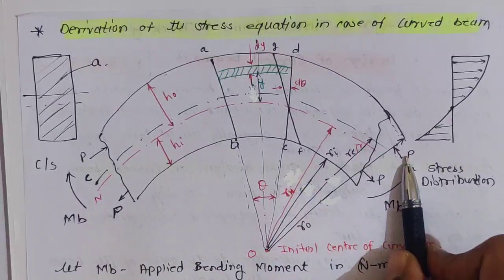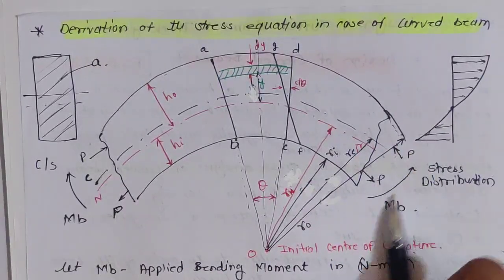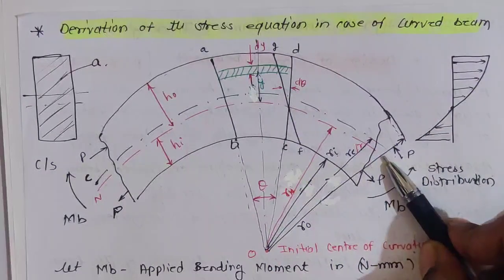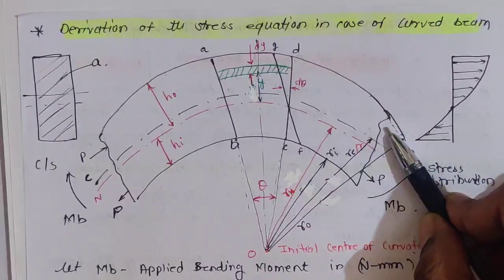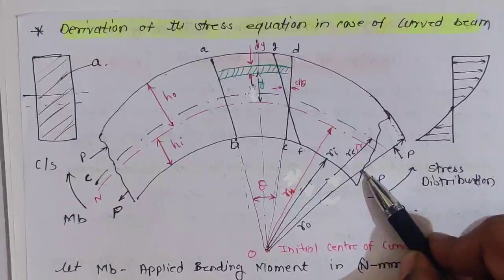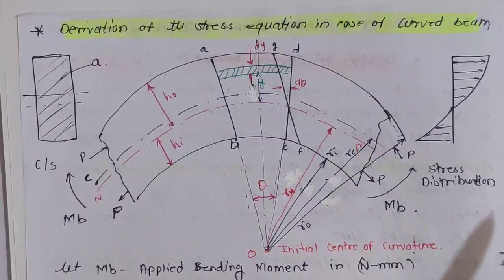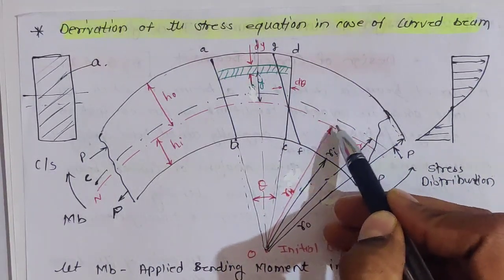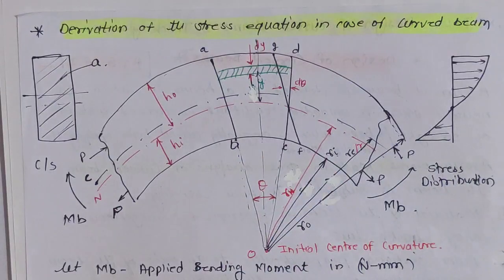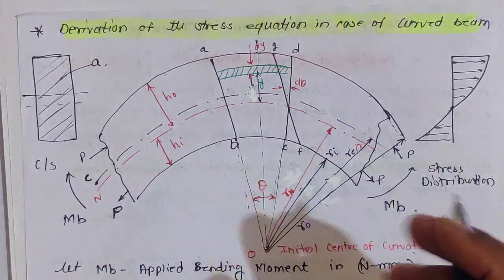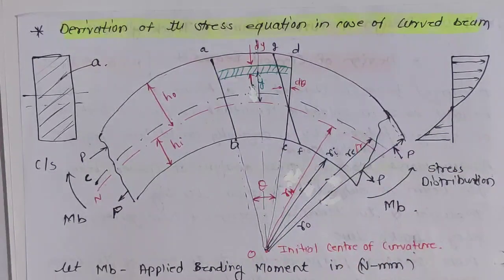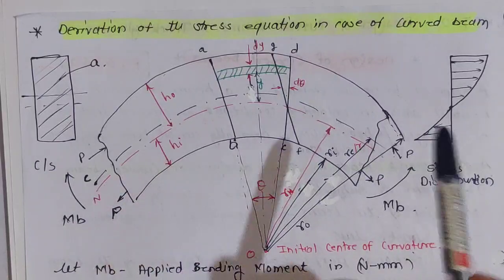After applying the bending moment, the layers above the neutral axis will be in compression and layers below the neutral axis will be in tension. The difference between the centroidal axis and the neutral axis is called eccentricity, denoted as E. Now we will move to the derivation.